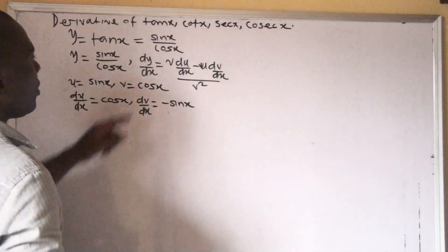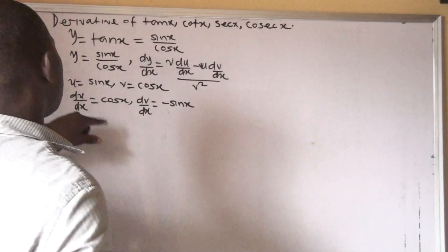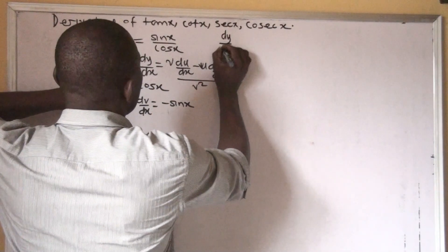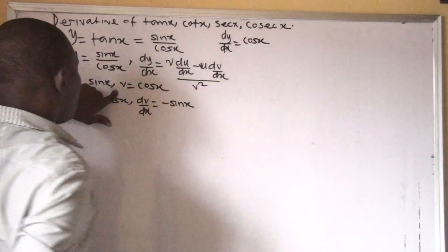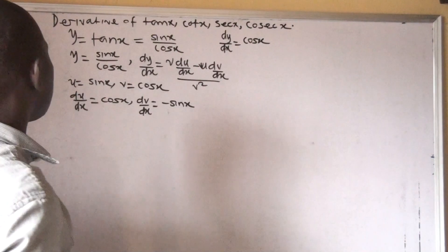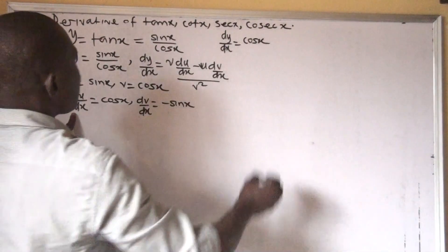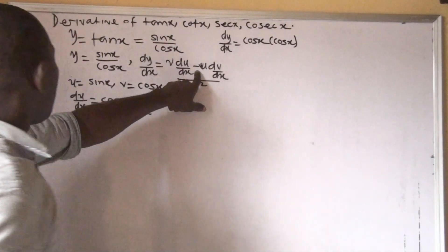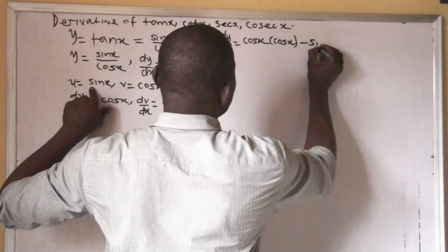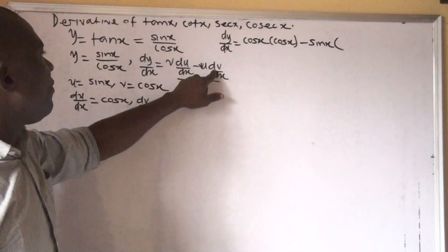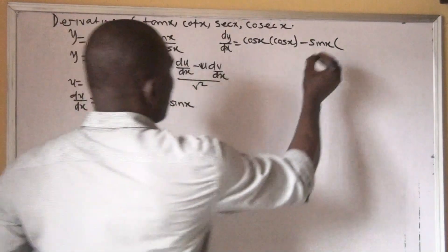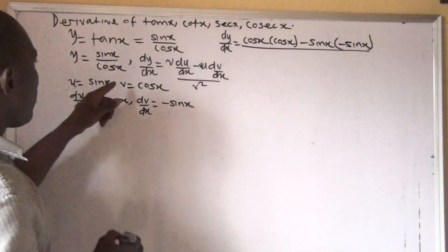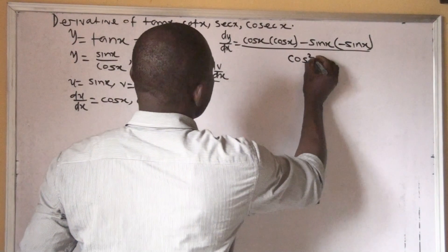So we fix it into our formula. This is v·du/dx — our v is cos x, times du/dx, which is cos x. That means it's times cos x. Then minus u — our u is sin x, that is minus sin x.